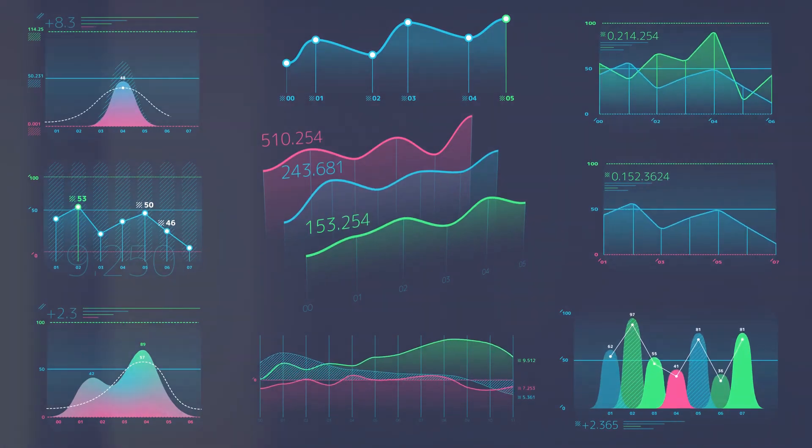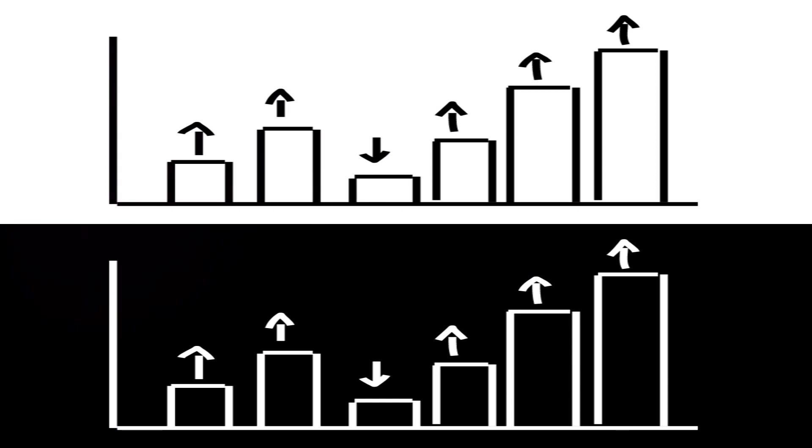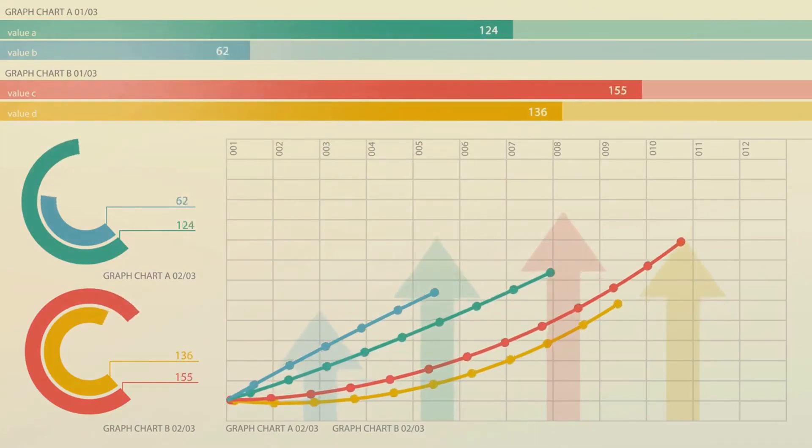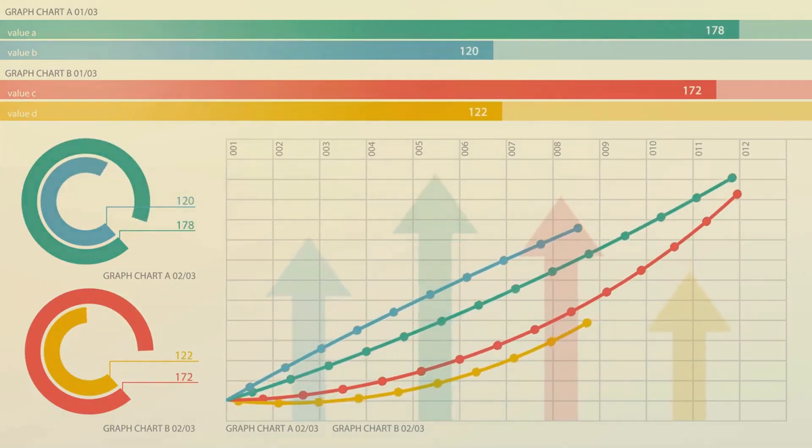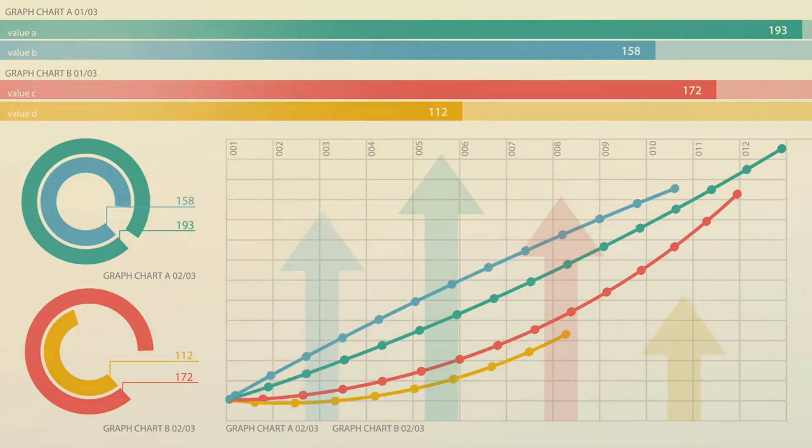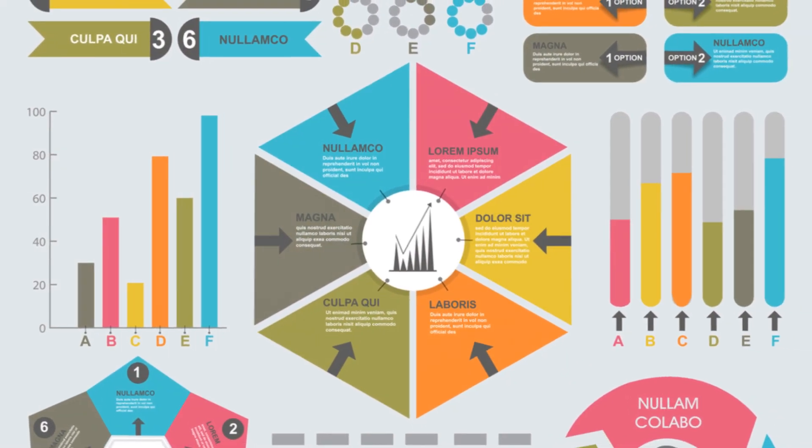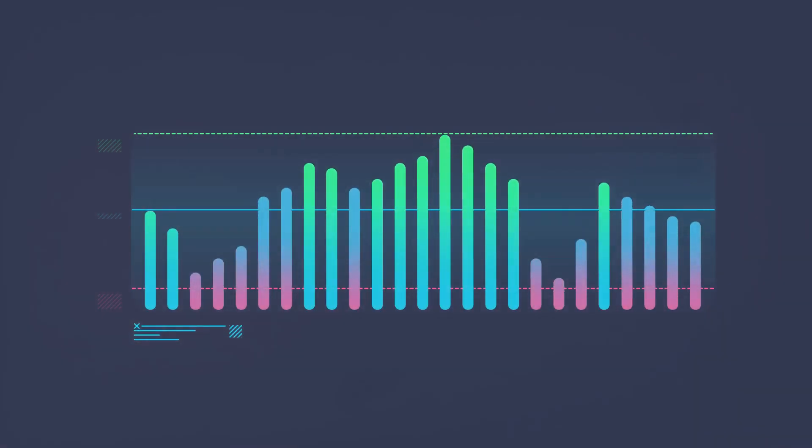There are also more advanced techniques like tree maps, box plots and radar charts. Each of these serves a unique purpose. Tree maps, for instance, are great for displaying large amounts of hierarchical data. Box plots, on the other hand, can give you a higher level overview of a data set, showing things like the median, quartiles and potential outliers. And then there's radar charts. These are like the Swiss Army knife of data visualisation, capable of displaying multiple quantitative variables.